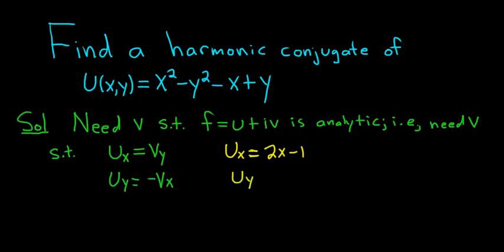Then u y, that's going to be equal to, well, the derivative of x squared is 0. The derivative of negative y squared is negative 2y. The derivative of negative x is 0. The derivative of y is 1. Just taking the partials of u with respect to x and with respect to y.